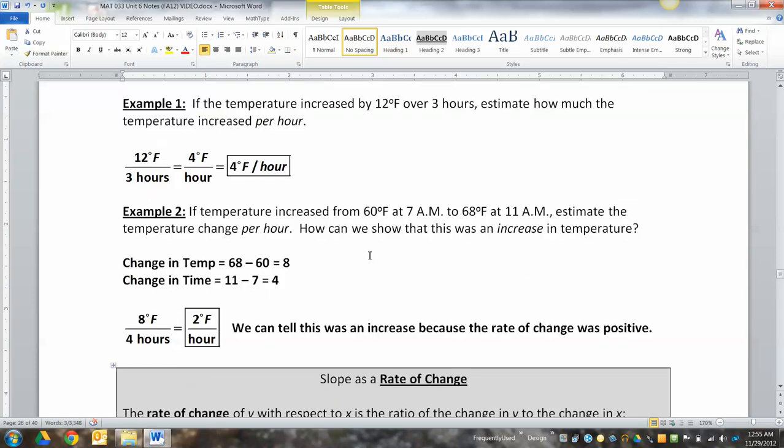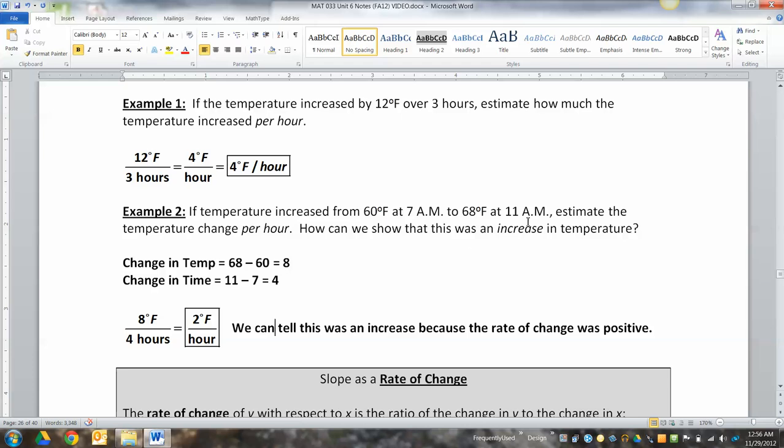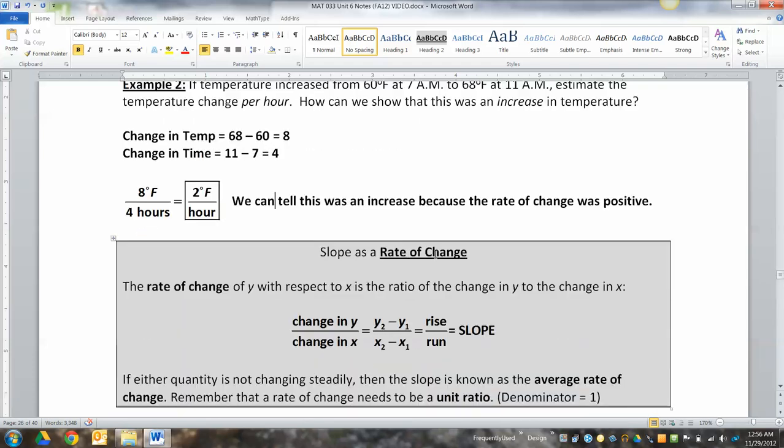Unit ratio means that the denominator is going to be one. So for example, look up here, both of these ones with these temperatures. See how the denominator is one hour, one hour. When you drive your car, it says you're going 70 miles per hour, not per three hours, right? But per hour, it's giving you a unit ratio because that's the way unit rates of change have to be written.